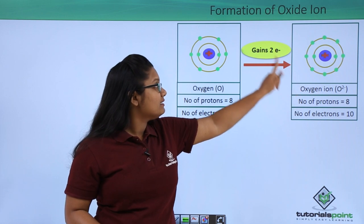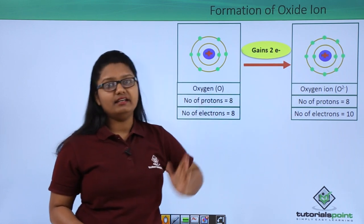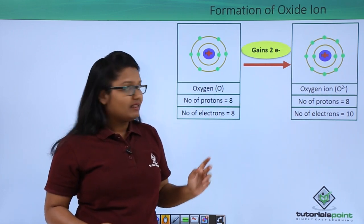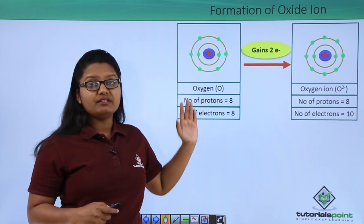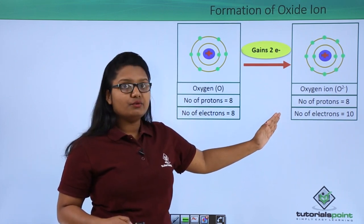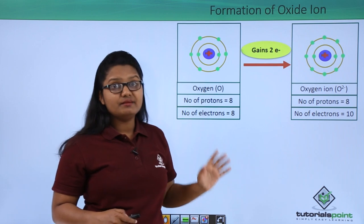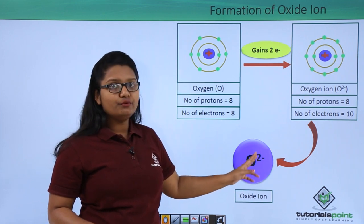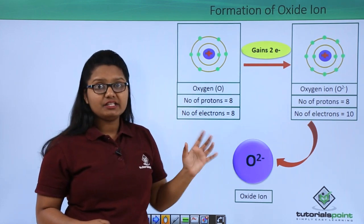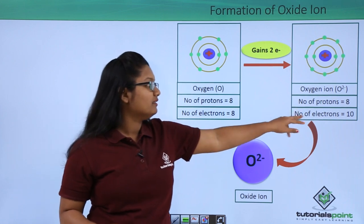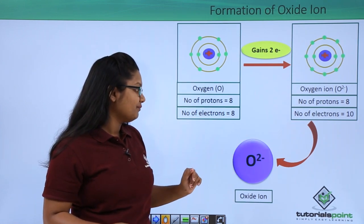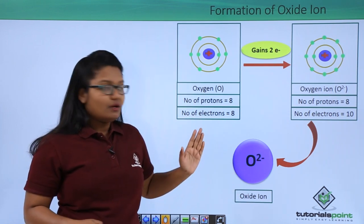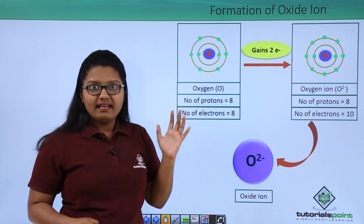After gaining two electrons, this oxygen atom has eight protons but ten electrons. Eight protons nullify eight electrons, leaving two extra electrons. These two extra electrons make the oxygen atom negatively charged, represented as O²⁻. This ion is called the oxide ion, and since it is a negative ion, it is called an anion.